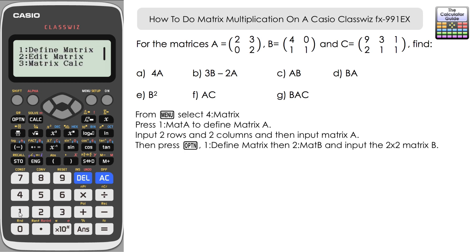So it's 1 and then 2 for matrix B, and again matrix B is a 2 by 2 matrix, and once again fill in the values for matrix B, 4, 0, 1, 1.